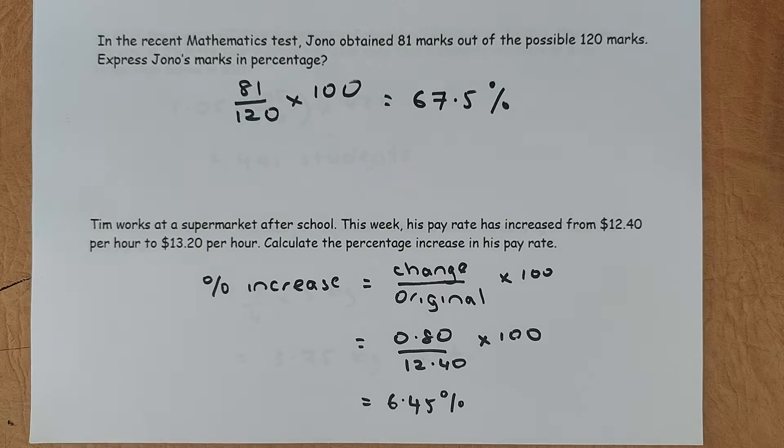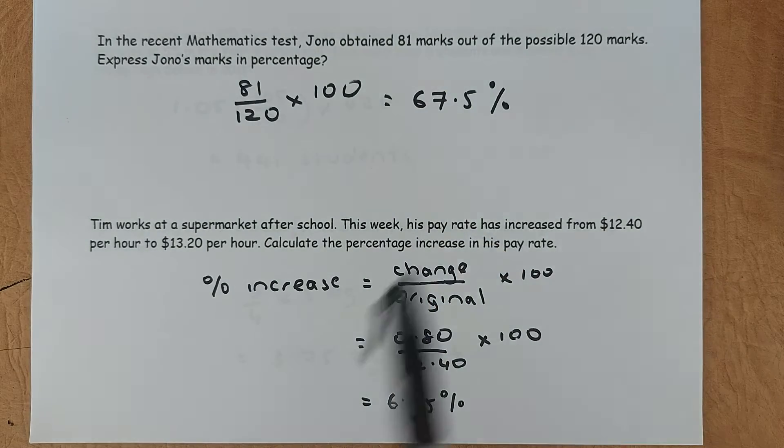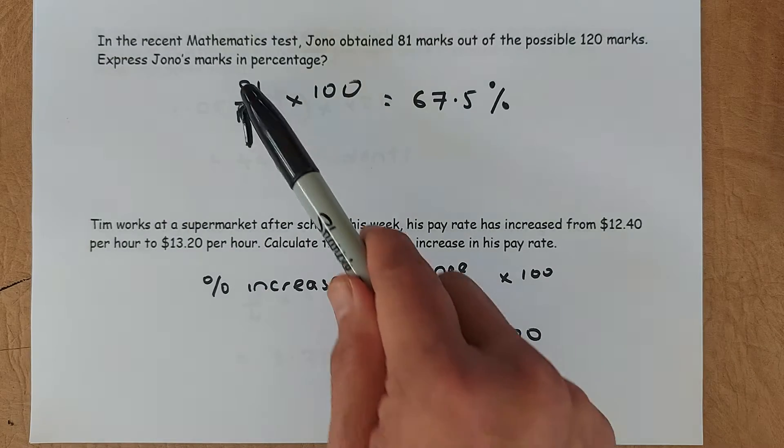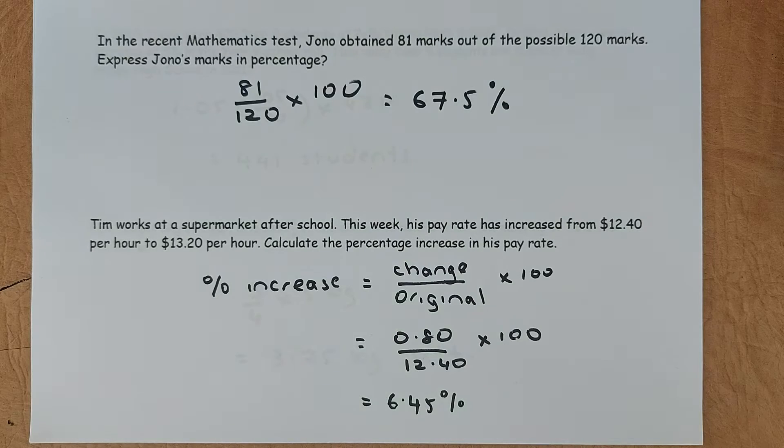The first question is, in the recent exam, Jono obtained 81 marks out of a possible 120. What is his marks in percentages? So 81 of 120, that is a fraction to convert into a percentage. You just multiply by 100 so you get 67.5%. That will give you a mark in the exam.